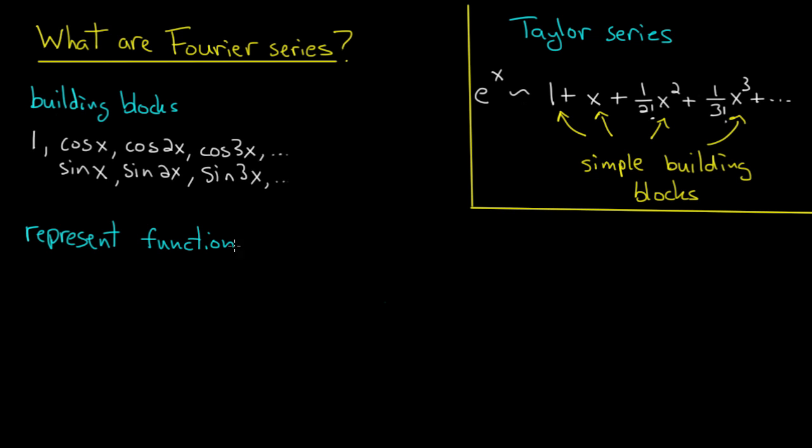So we want to have some expansion of the function, let's say f of x, in terms of these sines and cosines: a0 plus a1 cos x plus a2 cos 2x plus a3 cos 3x plus a4 cos 4x, etc. And then we'd have some sine terms, let's say b1, sin x, sin 2x, sin 3x, etc.